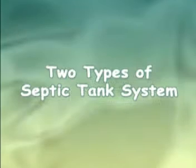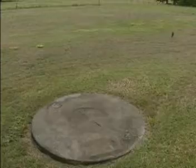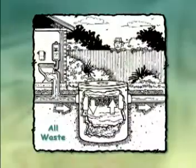There are two common types of septic tank systems. The all-purpose septic tank is a single tank which takes both black water from the toilet and grey water waste from the bathroom, kitchen and laundry.